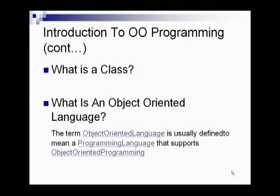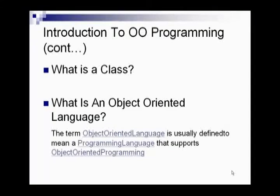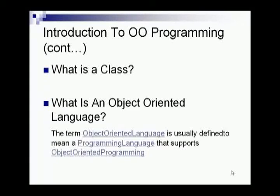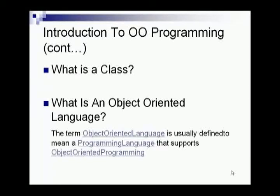The next important term is class. In the system we model, there will be a number of communicating objects. Some of these objects will have common characteristics and we can group them according to those characteristics. These objects have the same mold or template, and such a group represents a class. A class represents a template for several objects and describes how these objects are structured internally.